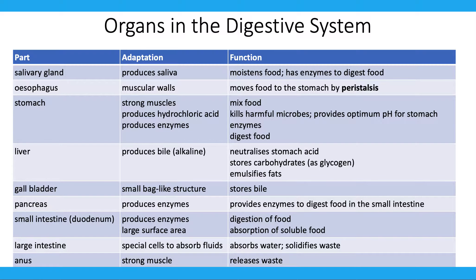So now looking at some of the organs in the digestive system, we have them over here in the table. The salivary glands moisten food and have enzymes to digest the food — their adaptation is that they produce saliva. The esophagus has muscular walls which move the food to the stomach. The stomach has strong muscles, produces hydrochloric acid and produces enzymes. The function of the stomach is to mix food, kill harmful microbes, provide the optimum pH for the stomach enzymes, and to digest food.